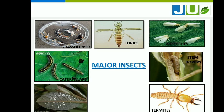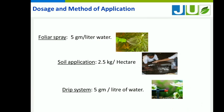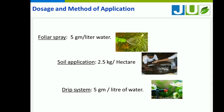We can apply Echuria to all kinds of crops and insects, including grasshoppers, mites, thrips, whiteflies, caterpillars, stem borers, aphids, termites, etc. For dosages and methods: soil application of 1 kg per acre is recommended. For foliar and drip application, 5 g per litre is recommended.